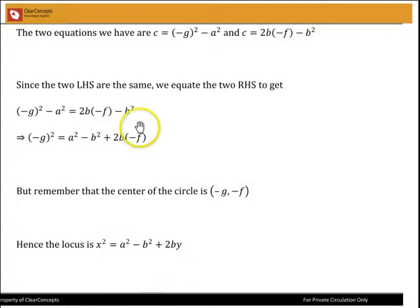So the two equations we are dealing with are here, c is equal to minus g whole squared minus a squared, and c is equal to 2b times minus f minus b squared. Since the two left-hand sides are the same, we equate the two right-hand sides. So we get this equation.